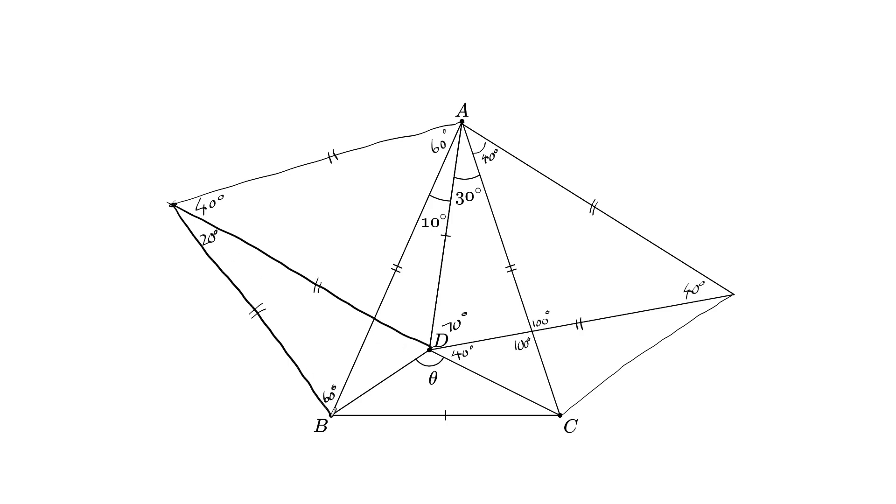But now looking here we've got an isosceles triangle because we've got that's the same length as that. And we've got the 20 degrees there which leaves 160 degrees to be split equally between these two angles. Therefore this is 80 degrees.